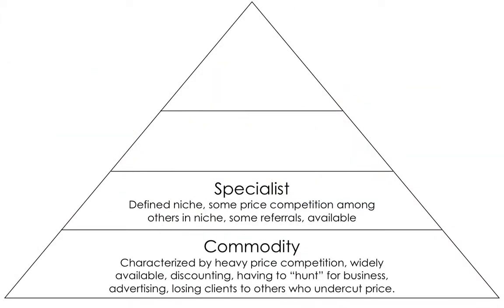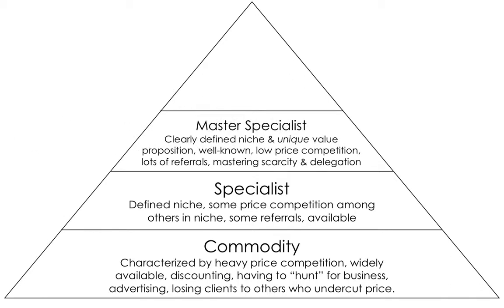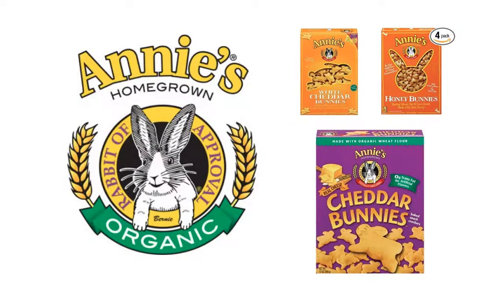The next level of the pyramid is the master specialist. The master specialist has a very clearly defined niche and unique value proposition. They don't face as much competition on price because there's demand for them — people are referring to them, they have incoming business, and they've mastered the art of scarcity and delegation. The example for that would be a specific brand of organic products like Annie's, which has lots of different brands inside it and has differentiated itself within the organic market.